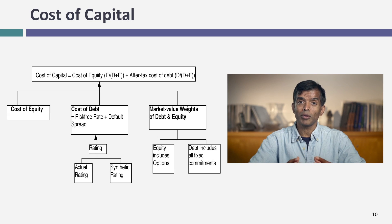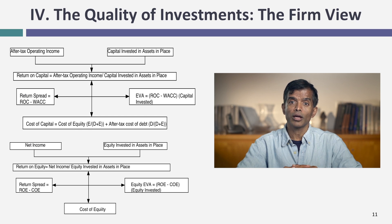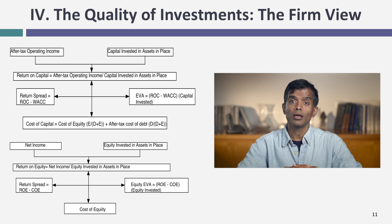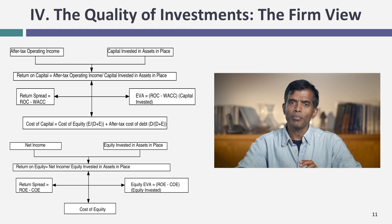The reason we do a cost of capital and cost of equity is it gives us a framework for assessing the quality of your existing investments. From an equity perspective, you take net income and divide by book equity to get a return on equity, compare that to the cost of equity, and look at the spread. You can multiply that spread by the book equity to get an equity EVA. Or from the perspective of the entire business, take after-tax operating income, divide by invested capital — book value of debt plus book value of equity minus cash — compare that to the cost of capital, and convert that spread into an EVA. This measures the quality of past investments, and is only as good as the accounting numbers that go into the return on equity and return on capital.